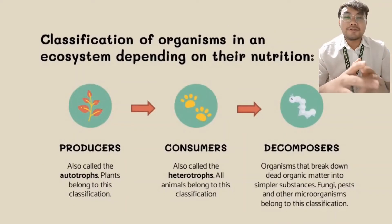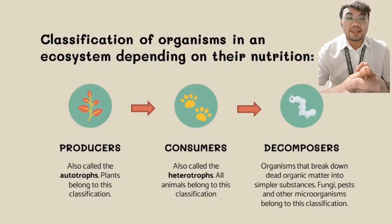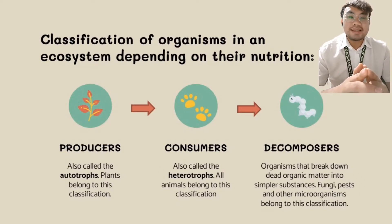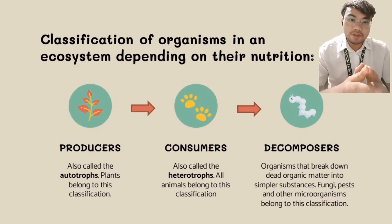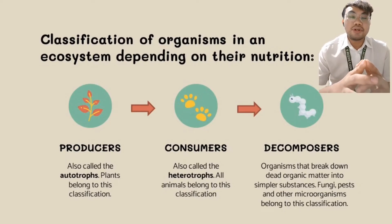We can classify organisms in an ecosystem depending on their nutrition. The first are what we call the producers. They are also called autotrophs since they make their own food. Plants belong to this classification. Second are the consumers, which are also called heterotrophs. These organisms are dependent on other organisms for them to survive.